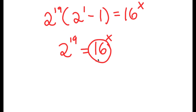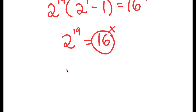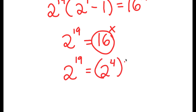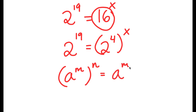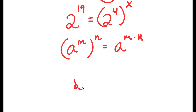Now, 16 is the same thing as 2 to the power of 4. So now I have 2 to the power of 19 is equal to 2 to the power of 4 to the power of x. If I have something in the form a to the power of m to the power of n, this equals a to the power of m times n. So 2 to the power of 4 to the power of x equals 2 to the power of 4x.